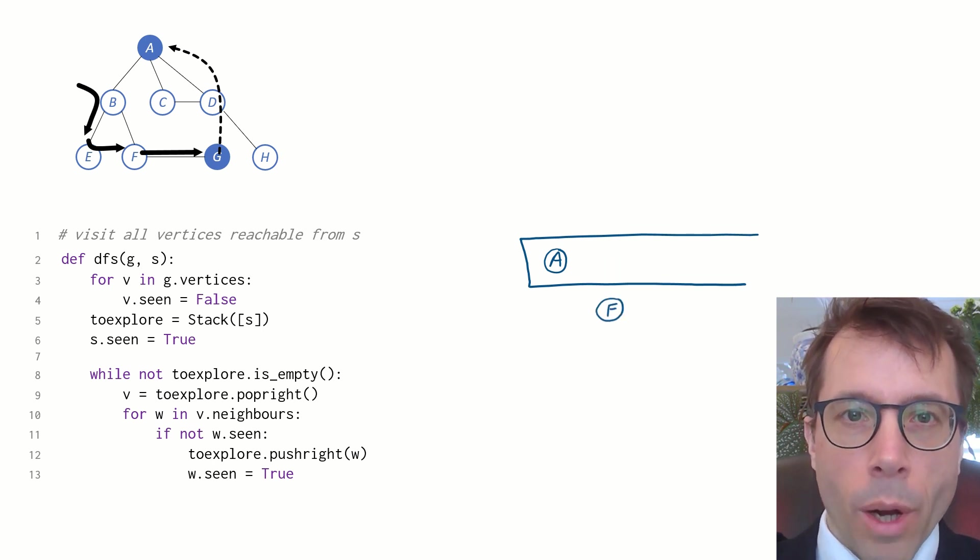As usual, pick out the rightmost vertex, here it's F. Does F have any neighbours we haven't yet seen? Yes, just one, namely G. So we push it onto the stack on the right. And now we're done with F. Next iteration.